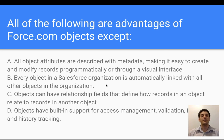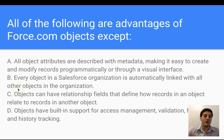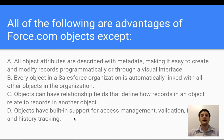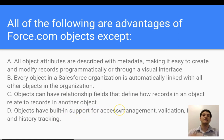All of the following are examples of Force.com object advantages, except: all object attributes are described with metadata, making it easy to create and modify records programmatically or through a visual interface; every object in a Salesforce organization is automatically linked with all other objects in the organization; objects can have relationship fields that define how records relate to records in another object; and objects have built-in support for access management, validation, formulas, and history tracking. Most of these could be considered advantages of any system.